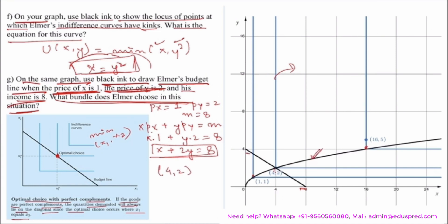This is the point where the locus of the points at which Elmer's indifference curves have kinks is intersecting with the budget line. Or, this is the point where the kink of one of the indifference curves is touching Elmer's budget line, ensuring that he gets the maximum utility and is also exhausting his income simultaneously. So that was all for this video.